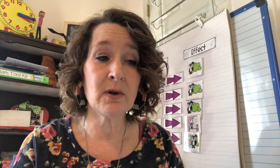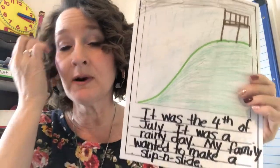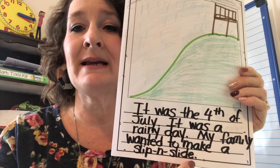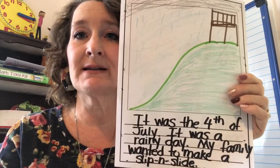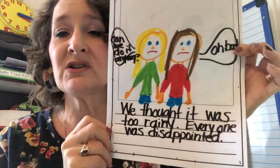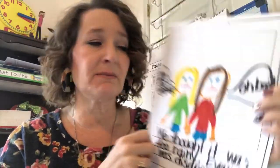Remember, it's so important to go back and look at what we've already done before we start writing, so we'll know what to do on the next page. So far in my story I've told you: it was the 4th of July, it was a rainy day, my family wanted to make a slip and slide — and there's all that rain falling down. We thought it was too rainy and everyone was disappointed.